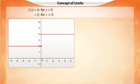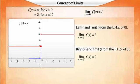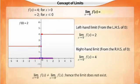Consider the function shown. Here, we need to find the limit of the function as X approaches 0. In the graph, the dot at 2 and the hole at 4 indicate that the function takes a value of 2 at X equal to 0. On approaching 0 from the left-hand side, the height of the graph approaches 2, giving us the left-hand limit as 2. When we approach 0 from the right-hand side, the height of the graph approaches 4, giving us the right-hand limit as 4. Since the left-hand and the right-hand limits are not equal, we can say that the limit does not exist.